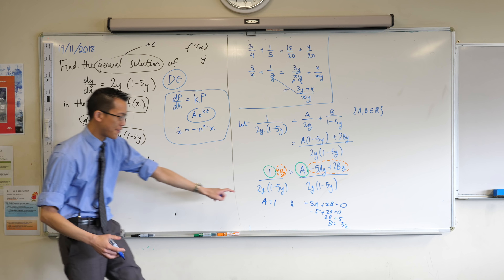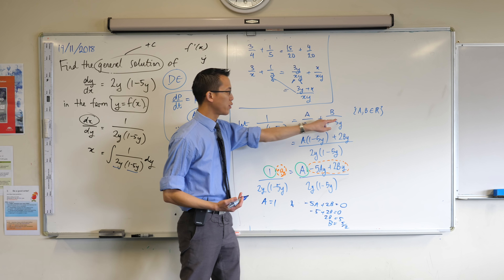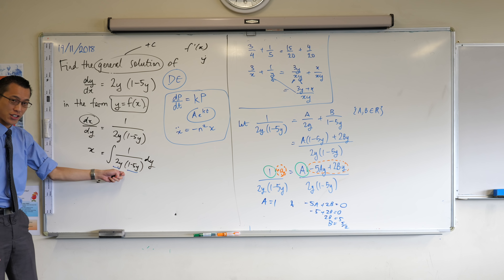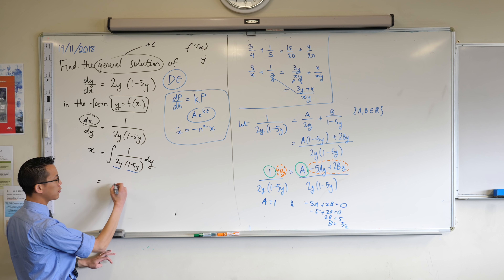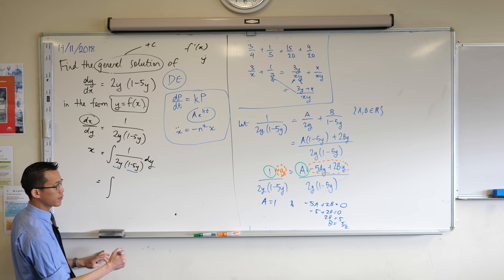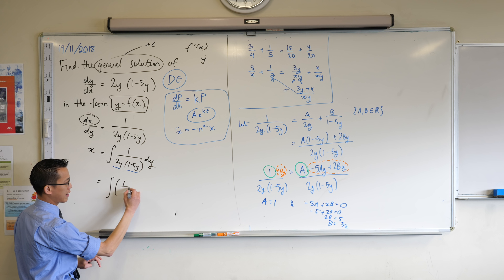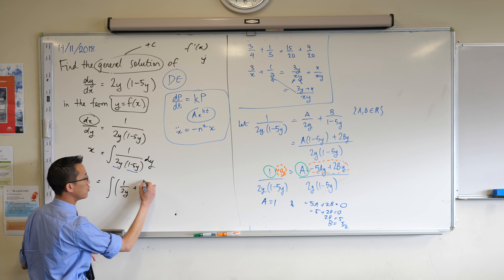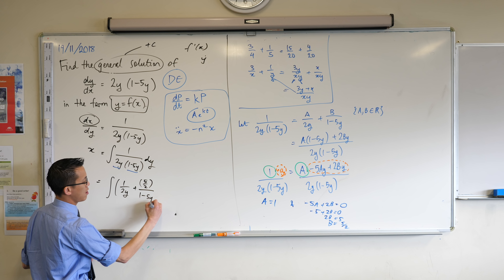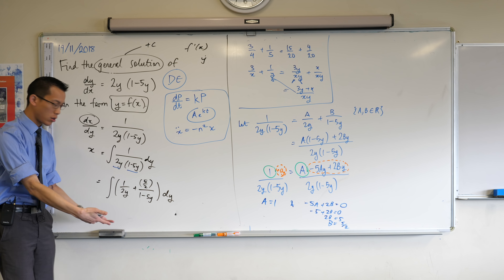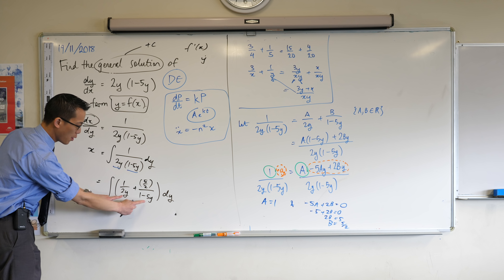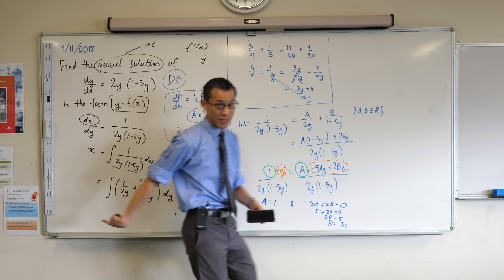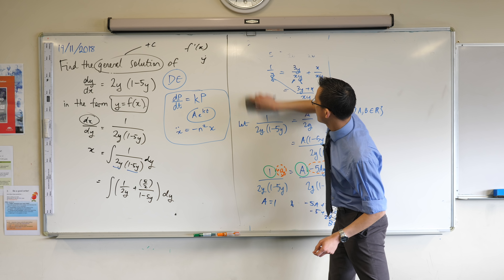So now I have A and B, and those are the things that go on top of these fractions. I did all of that just so I can break this fraction over here into two pieces I can actually integrate. Instead of that weird awkward fraction, what have I got? I've got one on 2y — there's the A — plus five on two on one minus five y. Now this looks longer, but it's a lot less awkward because both of these guys I can integrate: they're both just going to become logs. So it will still take a bit of work, but you can see the trajectory I'm headed on now.